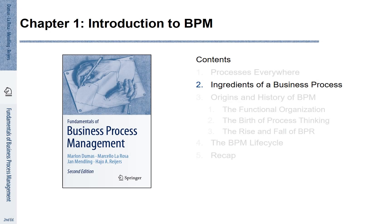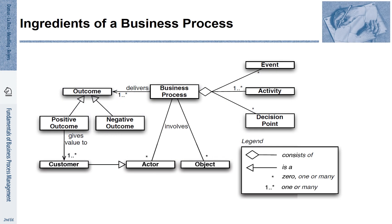Chapter 1, Section 2: Ingredients of a business process. There are different concepts that a business process refers to, as seen on this chart. A business process is related to a desired outcome. This desired outcome is important to a particular customer that is willing to pay for it. It can also be an internal customer who simply appreciates the delivery of a particular good or service.